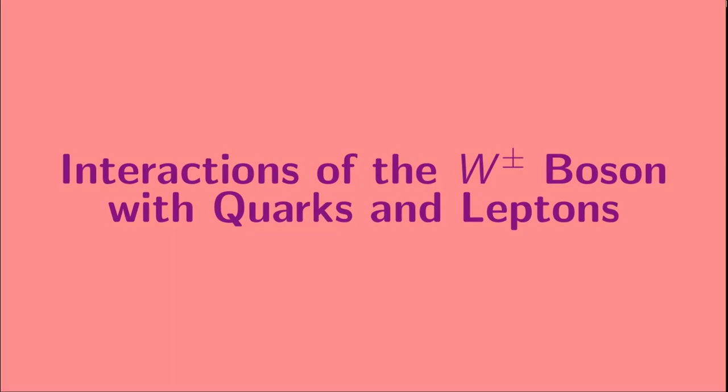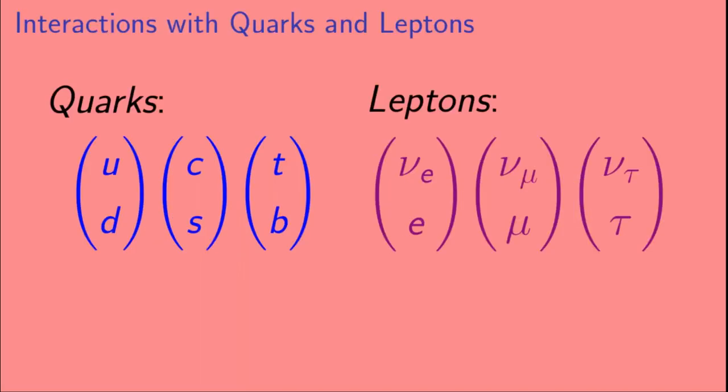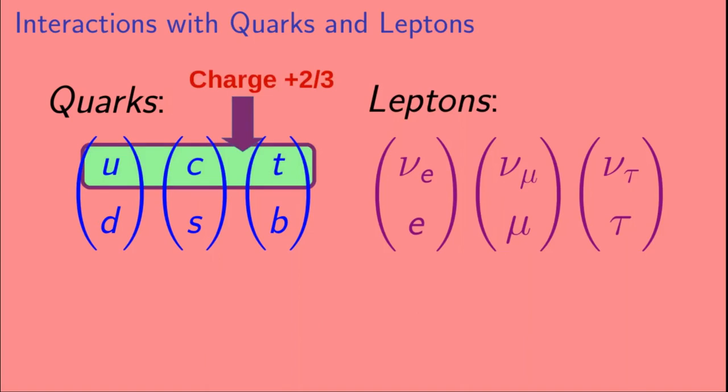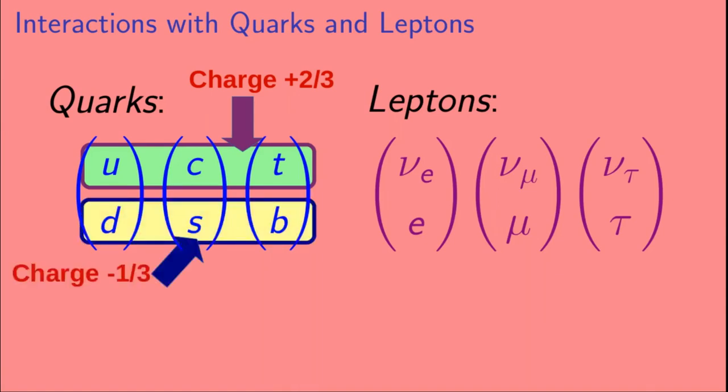Okay, so now we're ready to talk about the interactions of the W boson with quarks and leptons. So, we have six quarks and six leptons. For the quarks, each family has an up-type quark with a charge of plus two-thirds. These are called the up, charm, and top quarks, respectively. Each family also has a down-type quark with a charge of minus one-third. These are called the down, strange, and bottom quarks, respectively.